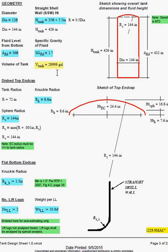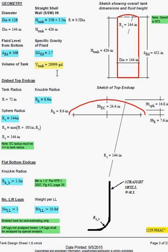Geometry input starts on page 3. It includes a tank ID, a tank height for straight shell, maximum fluid level, specific gravity of the fluid.